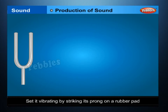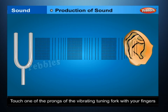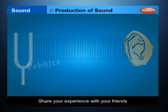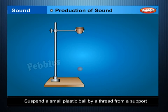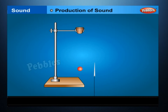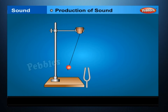Production of Sound. Take a tuning fork and set it vibrating by striking its prong on a rubber pad. Bring it near your ear. Do you hear any sound? Touch one of the prongs of the vibrating tuning fork with your fingers and share your experience with your friends. Now, suspend a table tennis ball or a small plastic ball by a thread from a support. Touch the ball gently with the prong of a vibrating tuning fork.